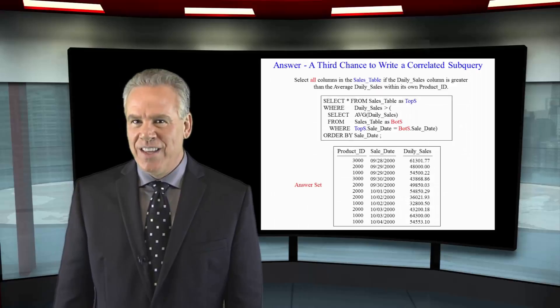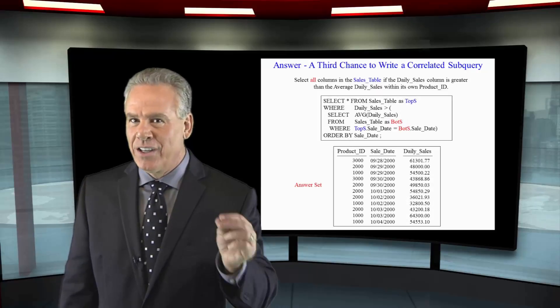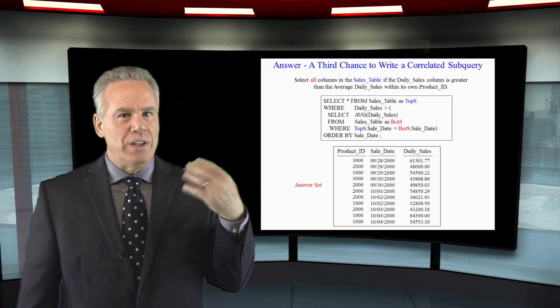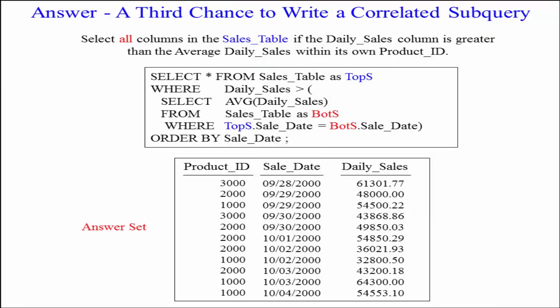This is important. If you're getting this down, you're really going to take something back with you. The only thing we needed to change between this query and the last query was the where clause. Now it's WHERE top s dot sale date equals bottom s dot sale date. Once again, we pulled from the sales table on the top and the bottom. We gave them a top s and a bottom s alias.